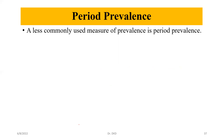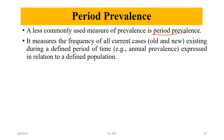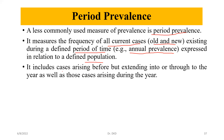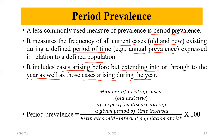A less commonly used measure of prevalence is period prevalence. It measures the frequency of all current cases — old and new — existing during a defined period of time. For example, annual prevalence is expressed in relation to a defined population. It includes cases arising before but extending into or through the year, as well as those cases arising during the year.